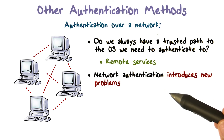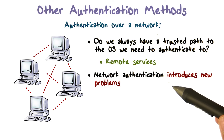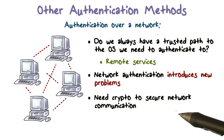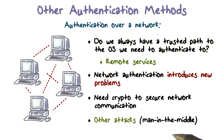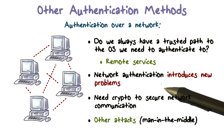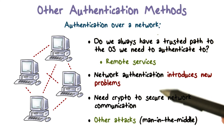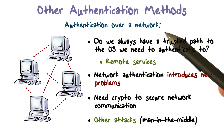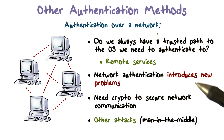Network authentication introduces a new problem: how do you deal with the absence of a trusted path? We need crypto to secure the network communication, which we'll address in a different lesson on network security. We'll have to worry about threats such as man-in-the-middle attacks. Authentication relies on the fundamental requirement of a trusted path, and in a network you won't have that, so you'll have to find some method to secure the network over which you send the evidence for authenticating yourself.